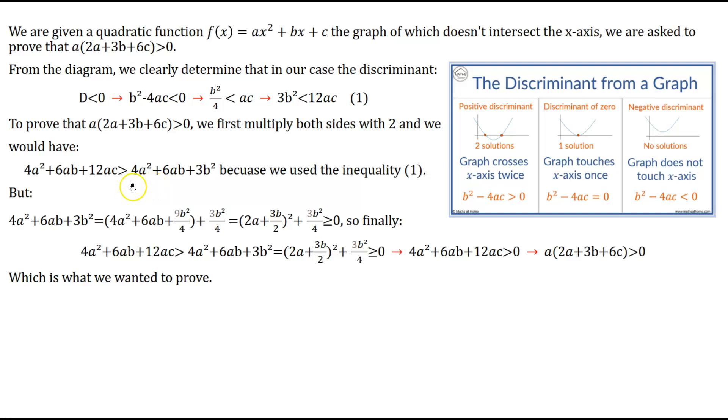But we can transform the right hand side of this inequality like this: 4a² + 6ab + 3b² = 4a² + 6ab + 9b²/4. So what are we doing? We are trying to complete the square plus 3b²/4, because the sum of these two factors is 3b². Now we have completed the square for the terms inside the brackets, which is (2a + 3b/2)² + 3b²/4,